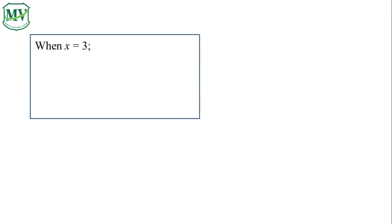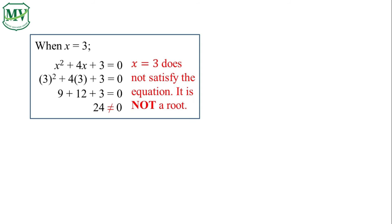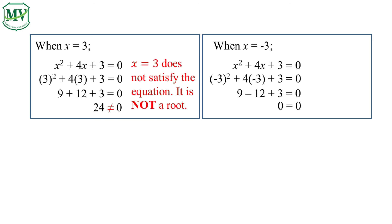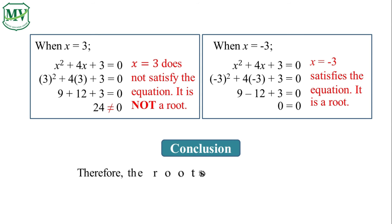Next, when x is equal to 3, x equals 3 does not satisfy the equation — it is not a root. But when x is equal to negative 3, the right and the left of the equation become equal, meaning x equals negative 3 satisfies the equation. It is a root. In conclusion, the roots of x squared plus 4x plus 3 equals 0 are negative 1 and negative 3.